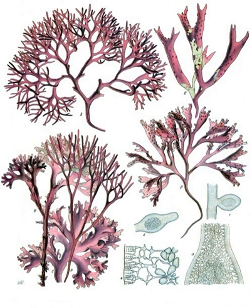Tetrasporophytes may also produce a carpospore, which germinates to form another tetrasporophyte. The gametophyte may replicate using monospores, but produces sperm in spermatangia, and eggs in carpogonia.